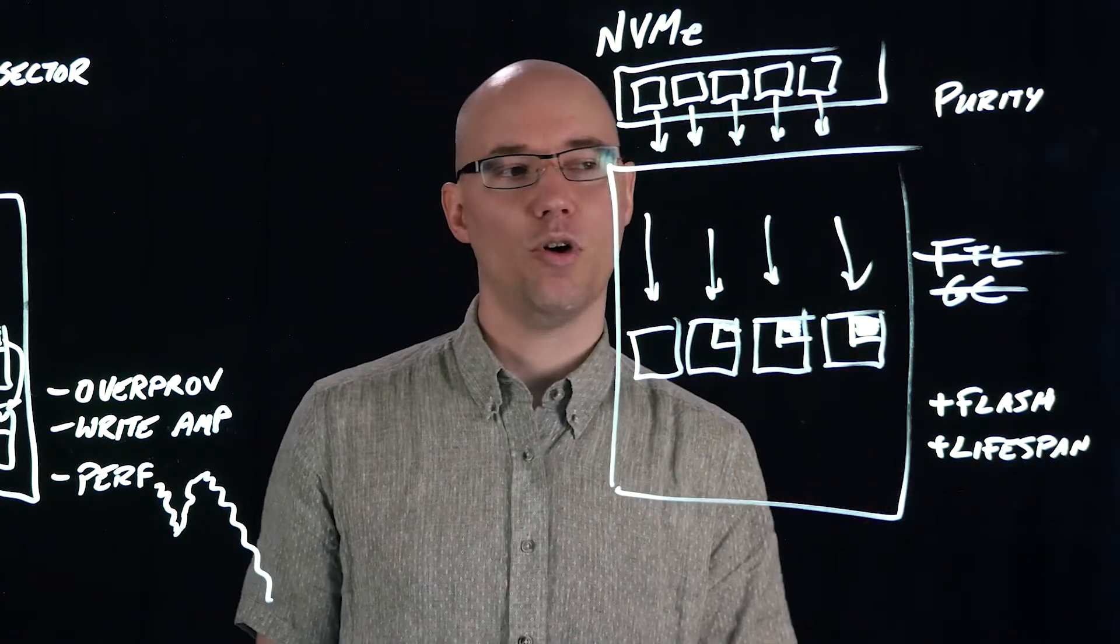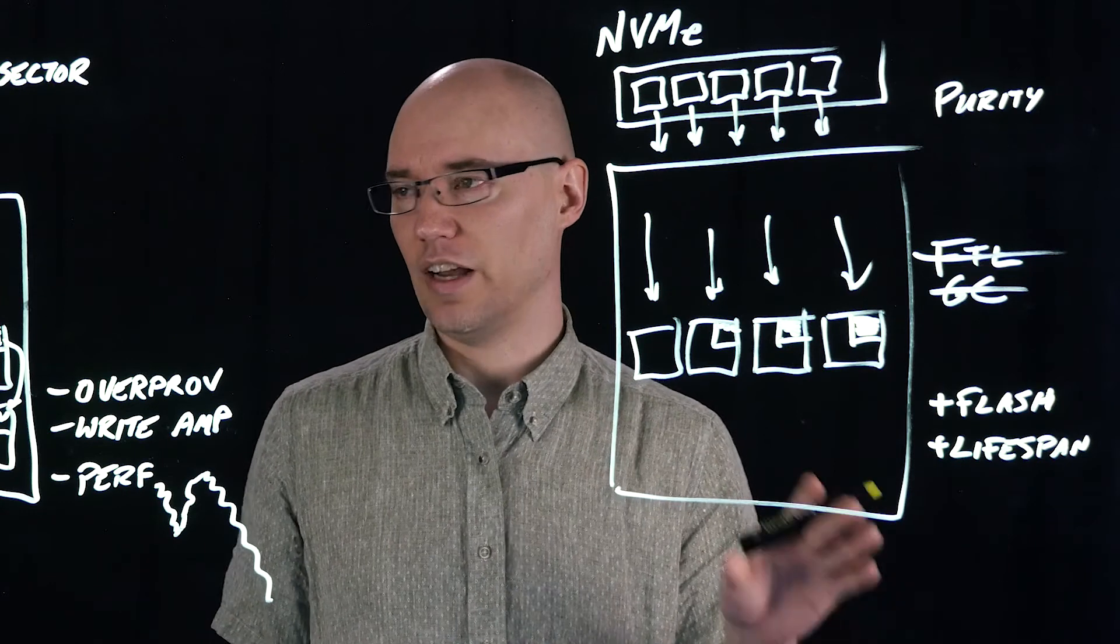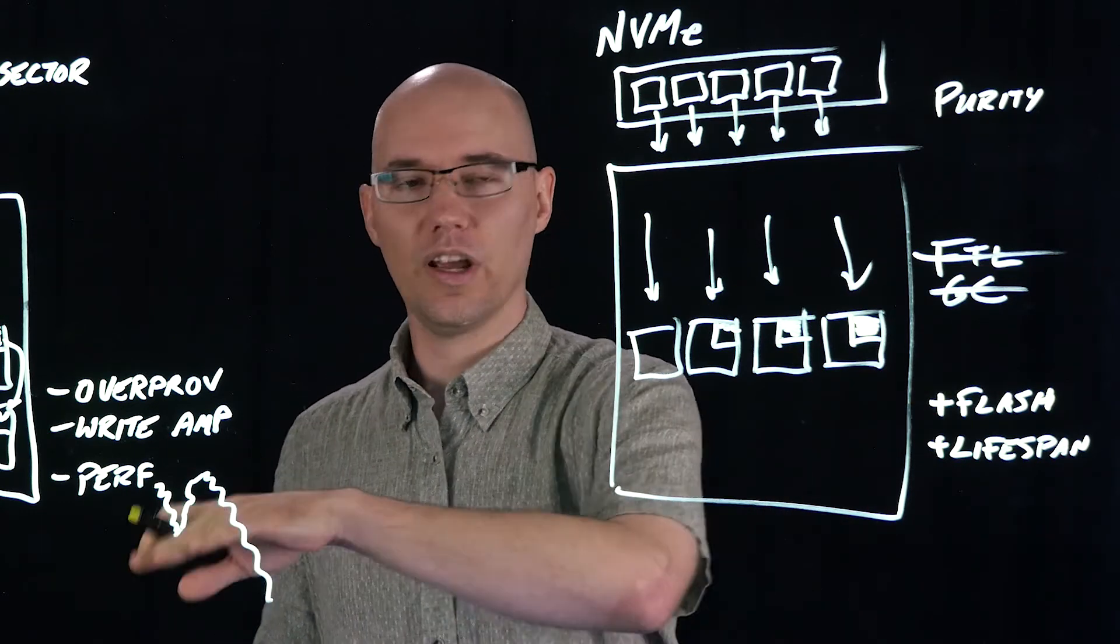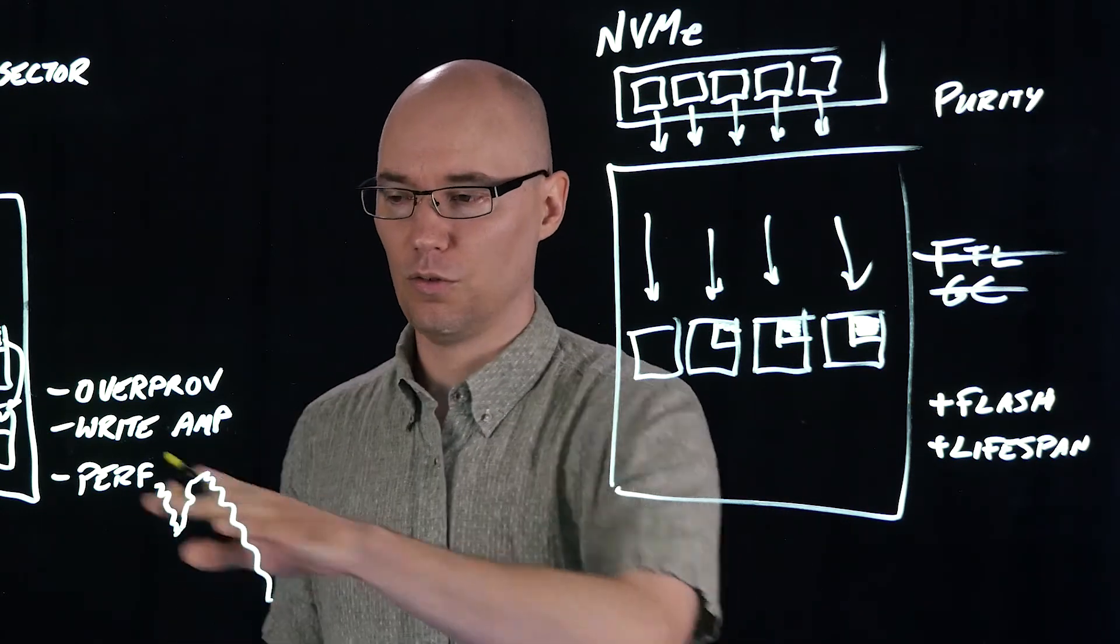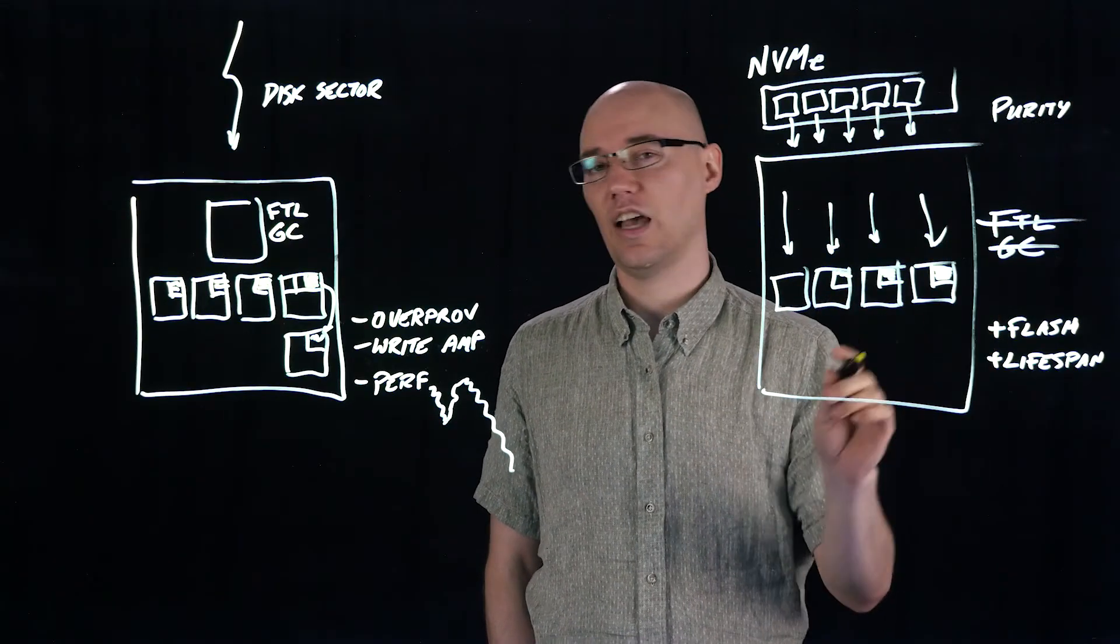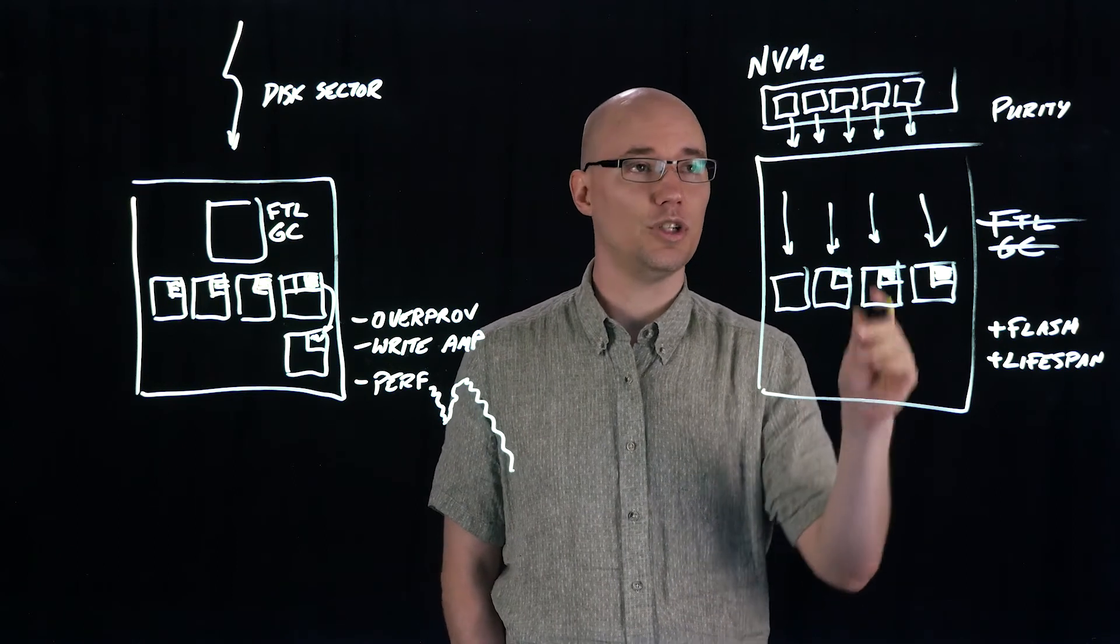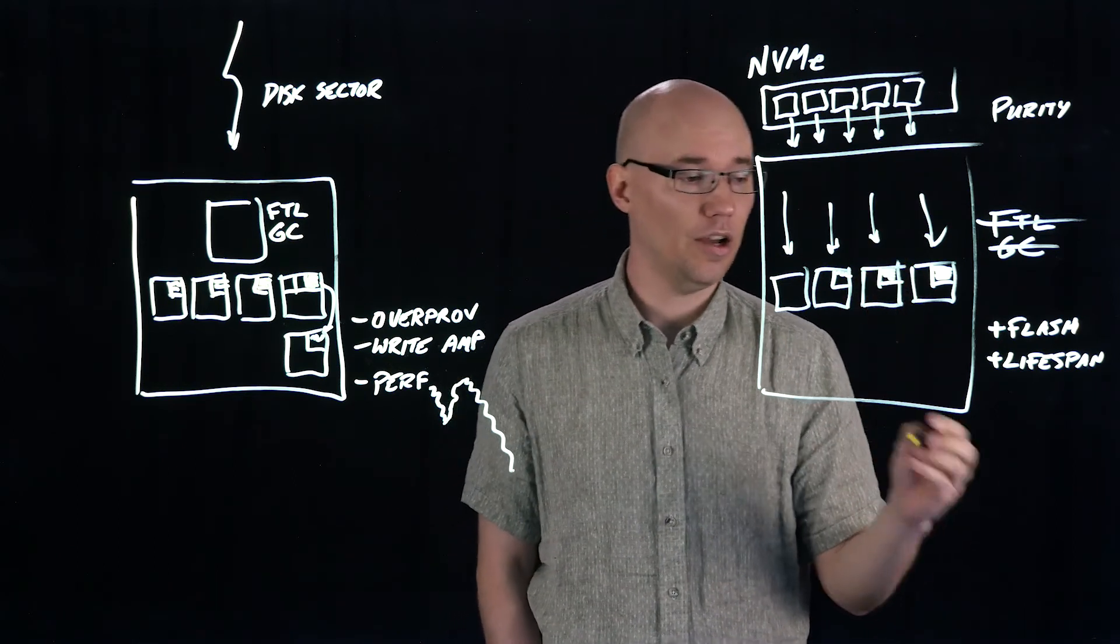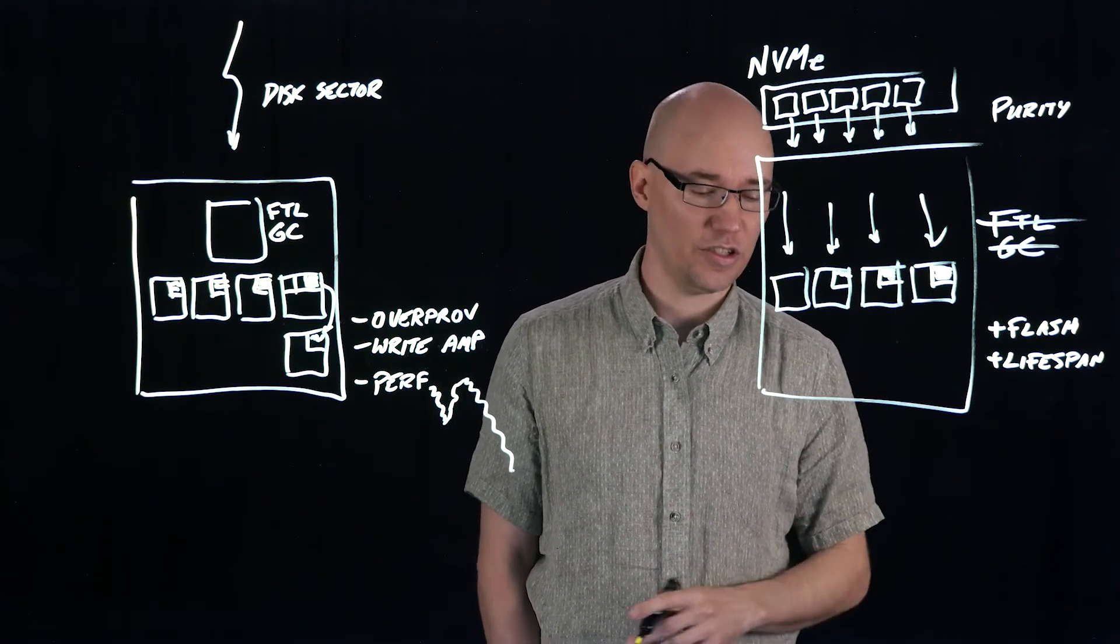And when it comes to performance, we have two great effects. Because we don't have this GC, we don't have inconsistent write latencies and read latencies. But we also have Purity be able to see exactly where every piece of data is stored, which means it can do perfect scheduling of the IO. This allows us to have near deterministic latency.